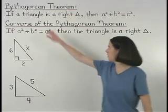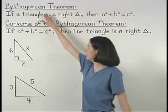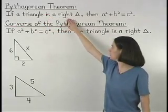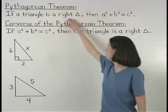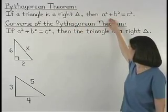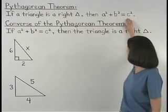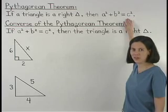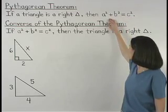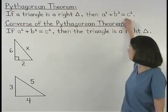Remember that the Pythagorean theorem states that if a triangle is a right triangle, then the sum of the squares of the legs of the triangle is equal to the square of the hypotenuse, or a squared plus b squared equals c squared.